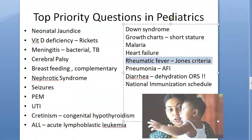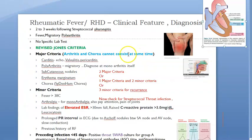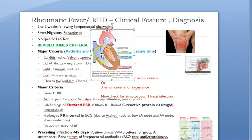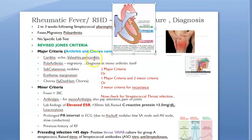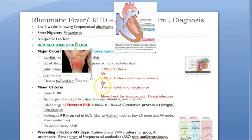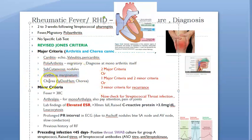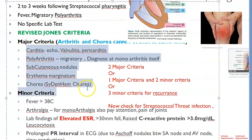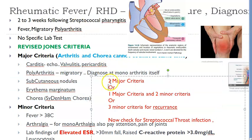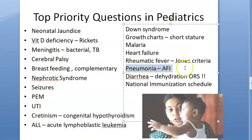Rheumatic fever is post-streptococcal. Know the Jones criteria for diagnosis. The five major criteria are: carditis (mitral valve affected — McCallum's patch), migratory polyarthritis, subcutaneous nodules, erythema marginatum, and Sydenham's chorea (St. Vitus' dance). Diagnosis requires two major criteria, or one major with two minor criteria.